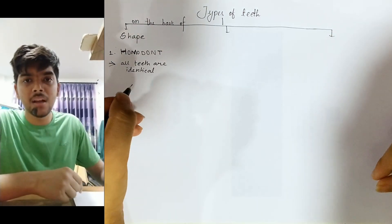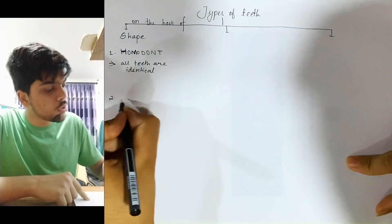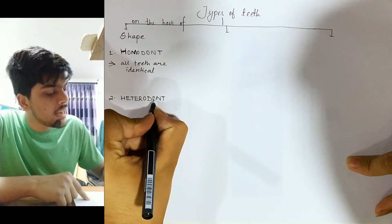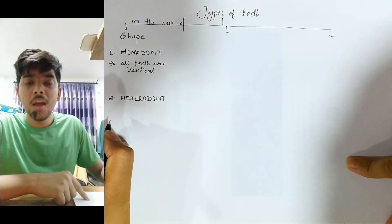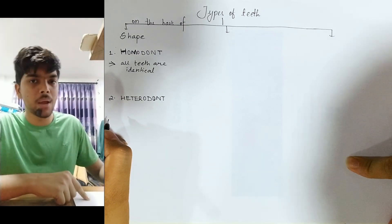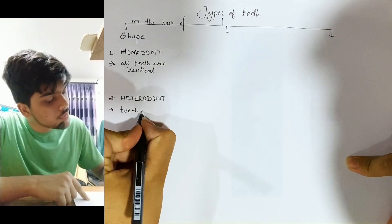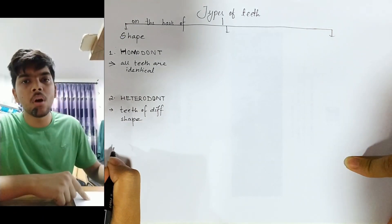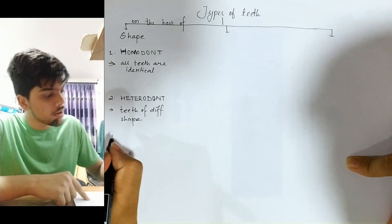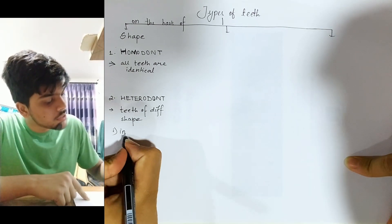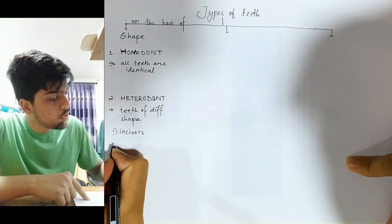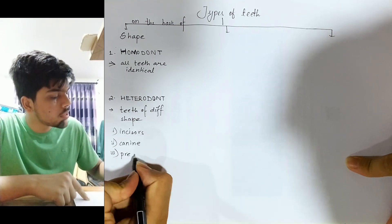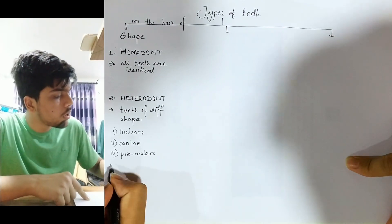Number two: Heterodont. In heterodont, teeth are different from each other. The types of teeth in heterodont include: number one, incisors; number two, canines; number three, premolars; and number four, molars.